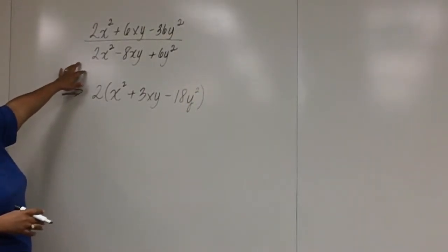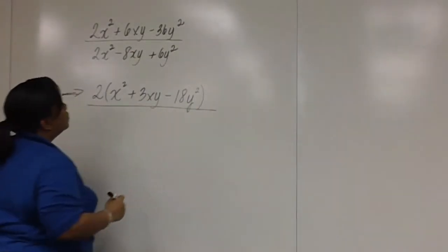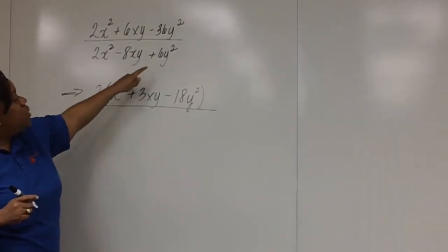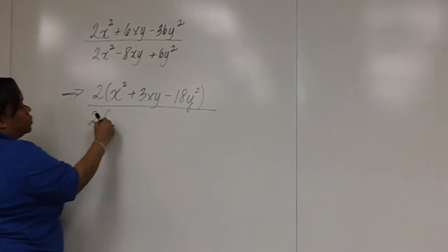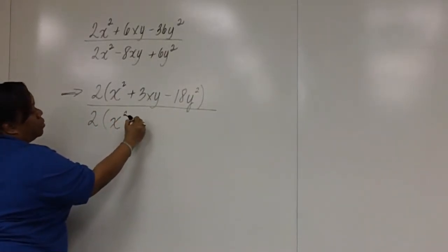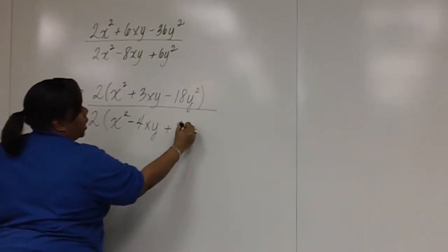But now we have to factor the denominator. The GCF between 2, 8, and 6 is 2. And we're left with x squared minus 4xy plus 3y squared.